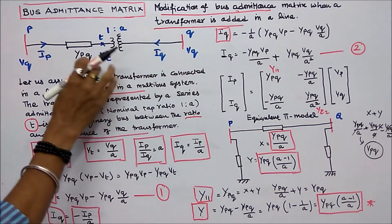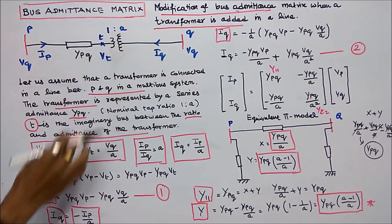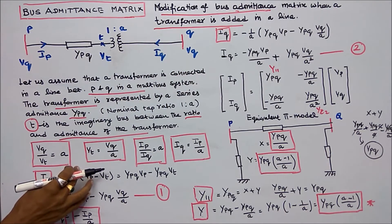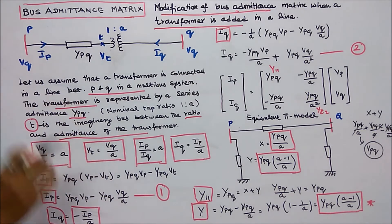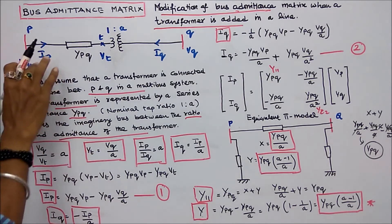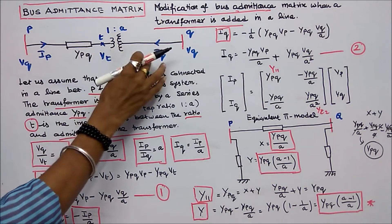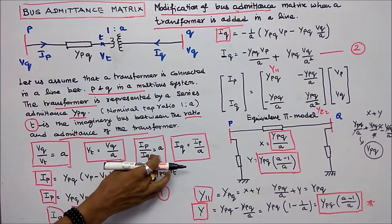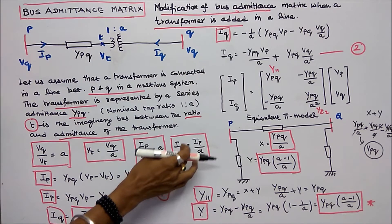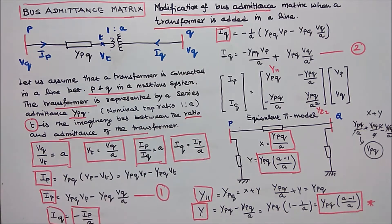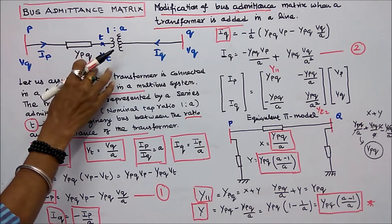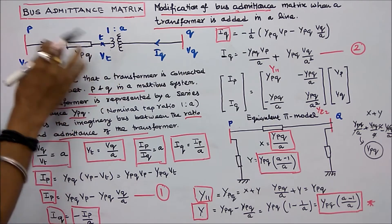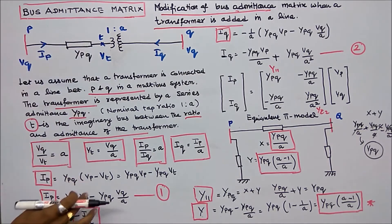Step 1: VQ divided by VT is equal to A, therefore VT is equal to VQ divided by A. Step 2: IP divided by IQ is equal to A, therefore IQ is equal to IP divided by A. The current IP is equal to admittance YPQ multiplied by VP minus VT.